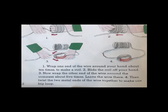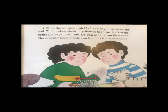Now wrap the other end of the wire around the compass about 5 times. Leave the wire there. Then twist the two metal ends of the wire together to make one big loop. Slide the magnet quickly back and forth inside the coil. This makes electricity flow in the wire. Look at the compass as you do this. Do you see the needle move? The moving needle tells you that electricity is flowing.